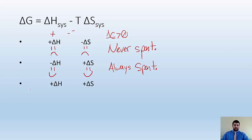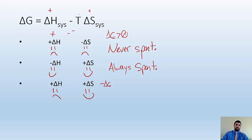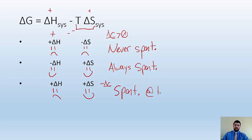What about the case where I have a positive delta H, which is unfavored, but a positive delta S, which is favored? If I need to get a negative delta G and I have a positive delta H and a positive delta S, I have to make sure that T times delta S is greater than delta H. That's going to happen at high temperatures, so it'll be spontaneous at high temperatures.